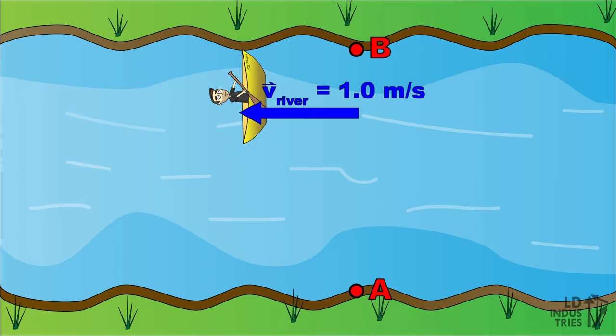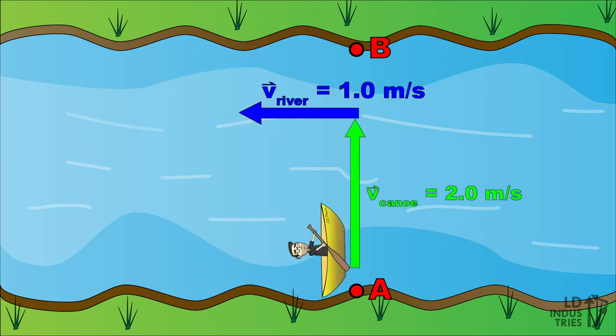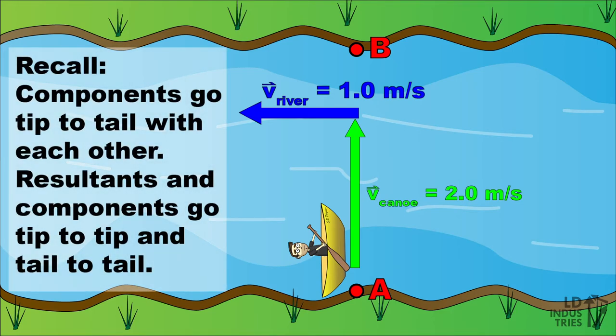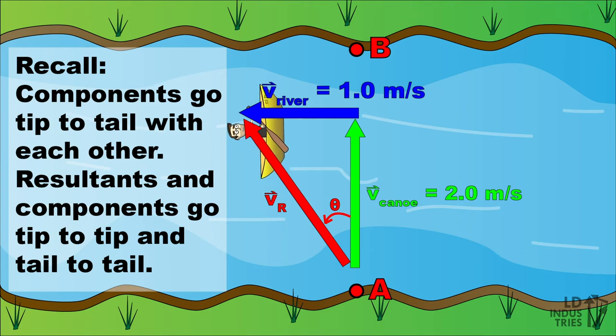We can see our overall velocity, what we call our resultant velocity, by drawing a proper vector diagram. We'll draw the velocity of the canoe and the velocity of the river as the components, so they'll go tip to tail. And we'll draw the resultant velocity, in the direction that we'll actually go, tip to tip and tail to tail to the components.